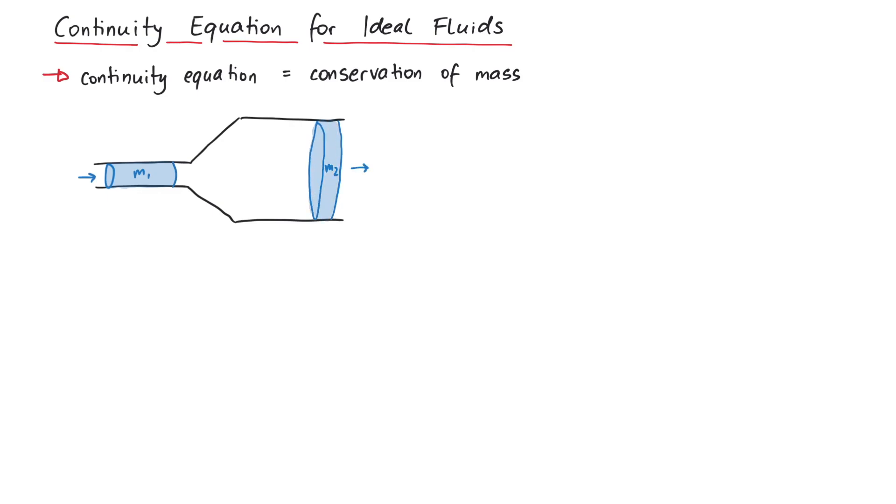By assuming conservation of mass, we can say that m1 per time delta t is the same as m2 per delta t. Mass is density times volume, and since an ideal fluid has constant density everywhere, we can cancel rho on both sides.